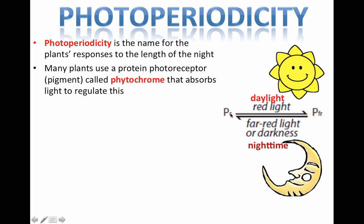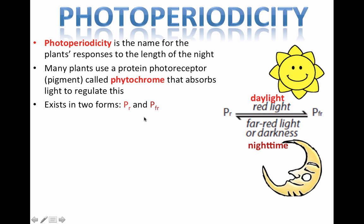So PR during the daytime — red light is the part of the visible spectrum corresponding to some of the red light within sunlight. Far red light refers to infrared light, the wavelength you'd get at nighttime or in the absence of daylight. PR in the presence of daylight gets converted into the form called PFR. In the absence of light or during nighttime, PFR gets slowly converted back into PR. The important one here is PFR for both long day plants and short day plants — notice the clever coloring, a brighter red and a darker maroon type red.